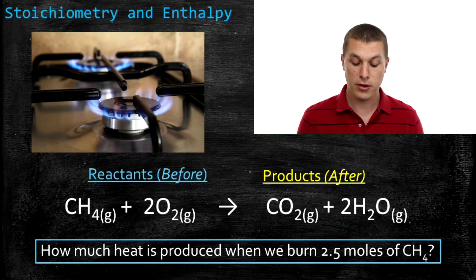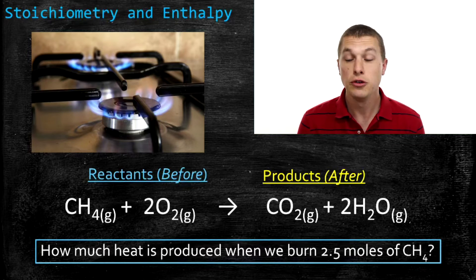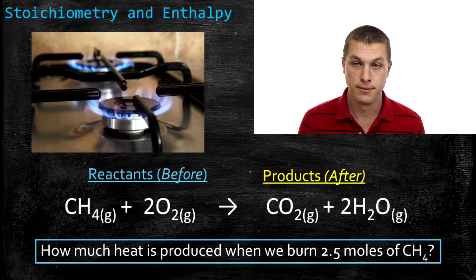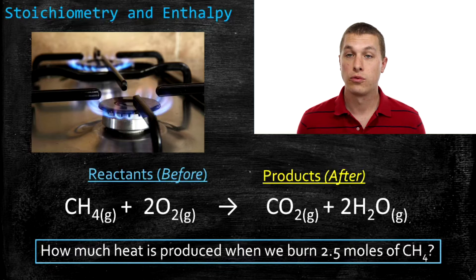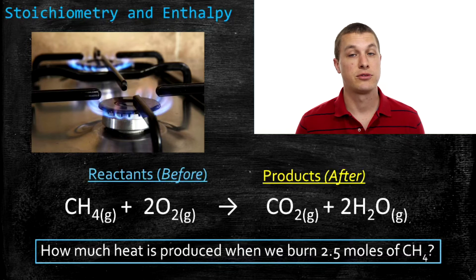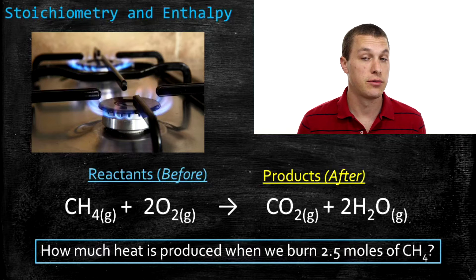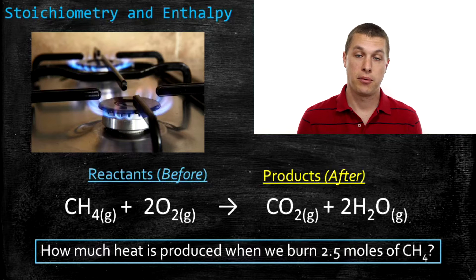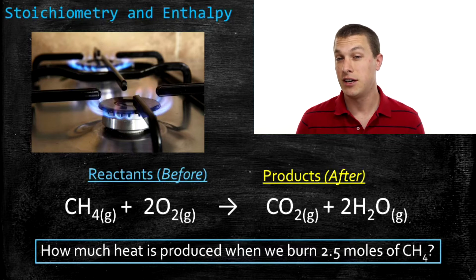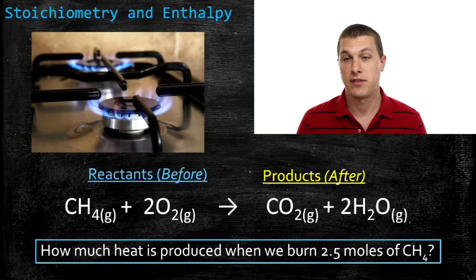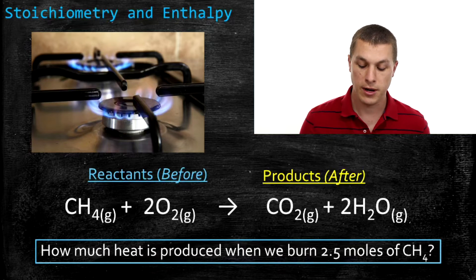Let's think about the question: how much heat's going to be released if I burn 2.5 moles of methane? The way we're going to do that is we're going to recall our rules from stoichiometry, which is thinking about chemical reactions as a list of ingredients that we put in and the products that we put out. We can basically just tack on how much heat a reaction produces and think of that as a product of our reaction.